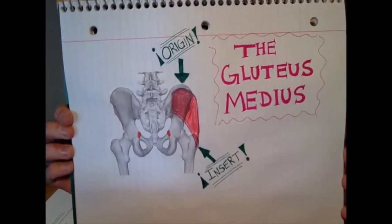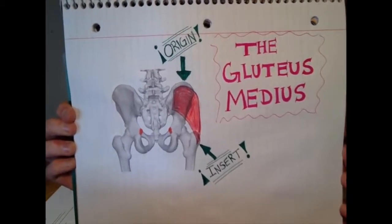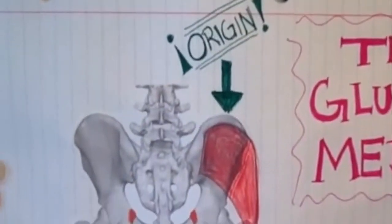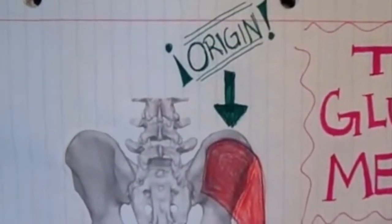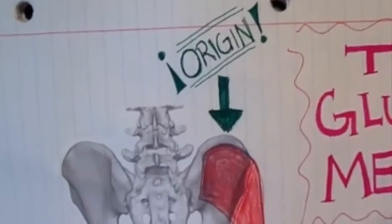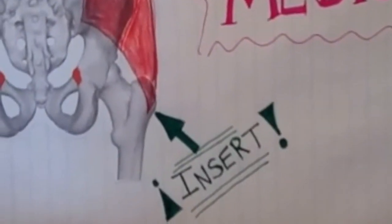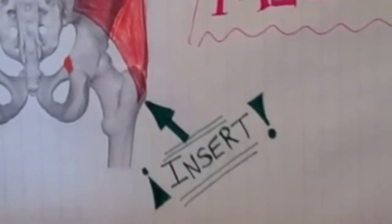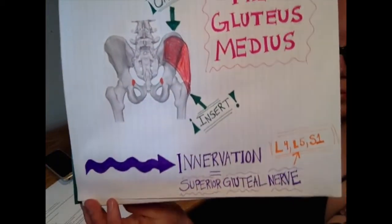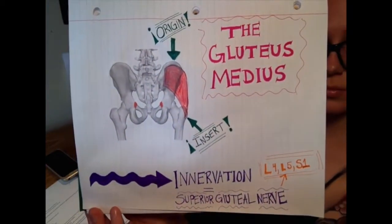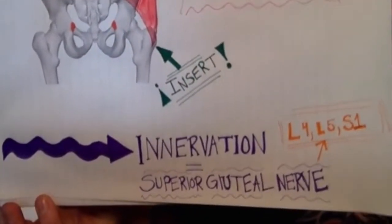The gluteus medius muscle originates at the gluteal surface of the ilium between the posterior and anterior gluteal lines. It inserts at the lateral aspect of the greater trochanter. The nerve innervation of the gluteus medius muscle is the superior gluteal nerve.